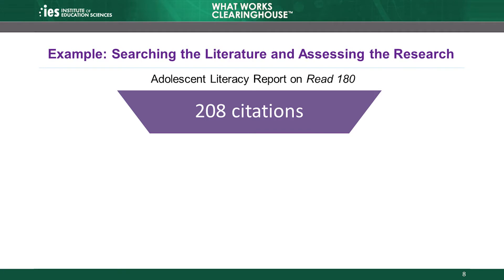In this second step of the systematic review process for the systematic review of Read 180, we conducted a literature search guided by the review protocol for adolescent literacy interventions. This protocol lists search terms relevant to the topic area and relevant additional sources, such as the National Reading Panel. The search produced 208 citations. In the next steps, these 208 citations were screened for eligibility, and those that met eligibility criteria were reviewed against WWC evidence standards. Ultimately, the WWC reported on and summarized findings from only a subset of these 208 citations that meet WWC design standards.